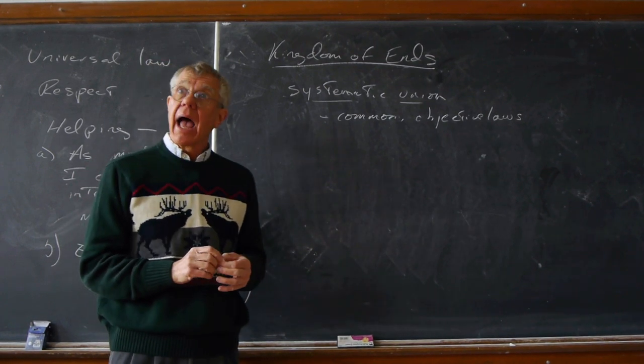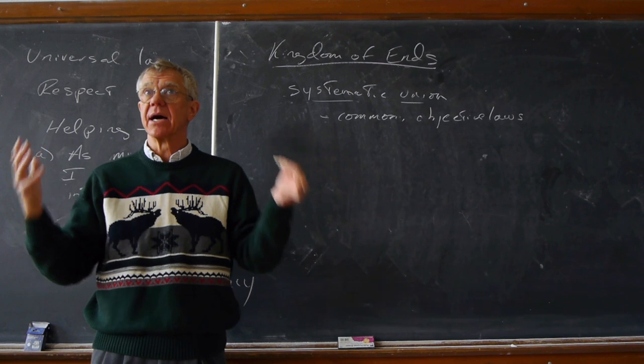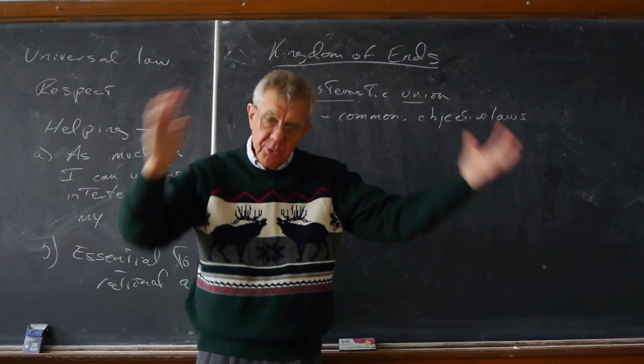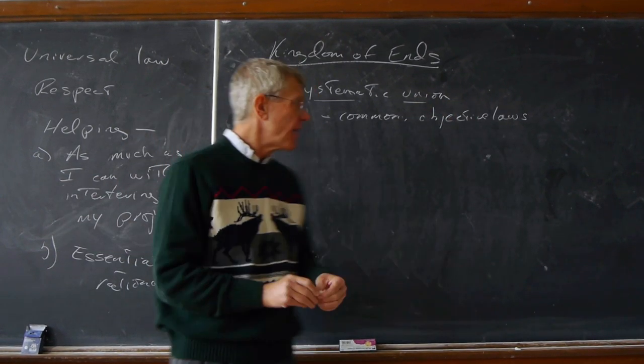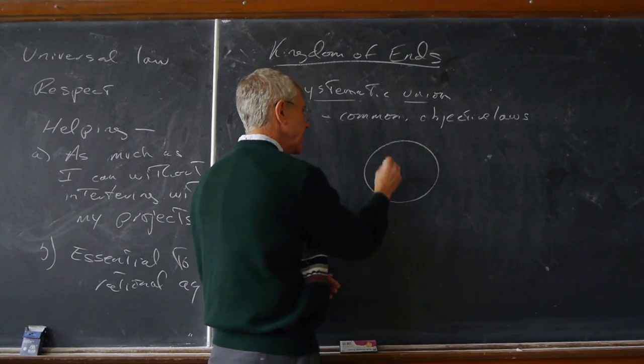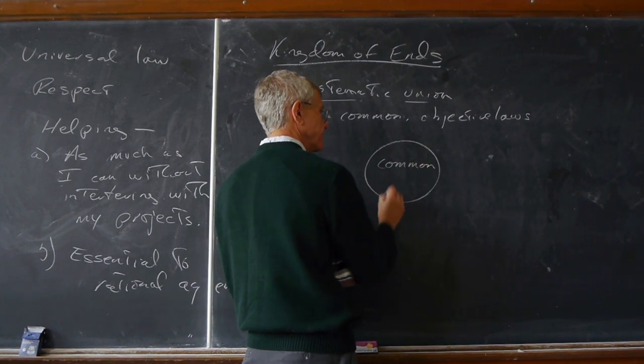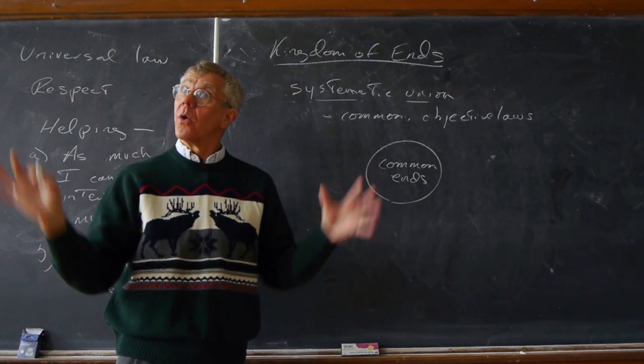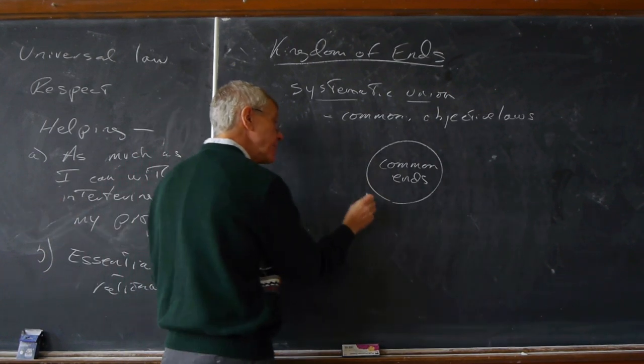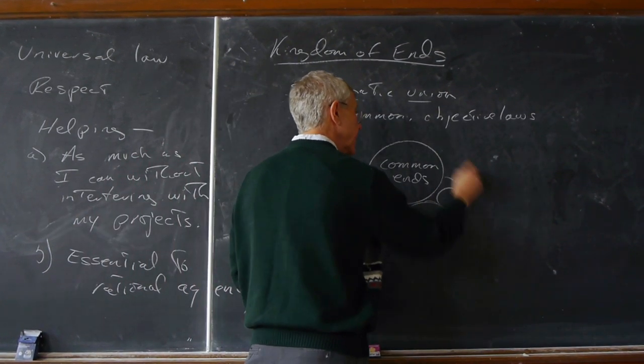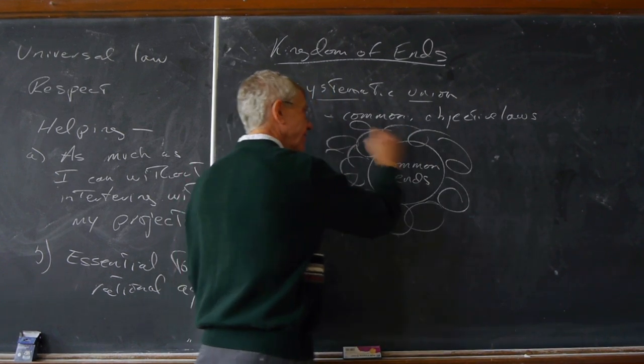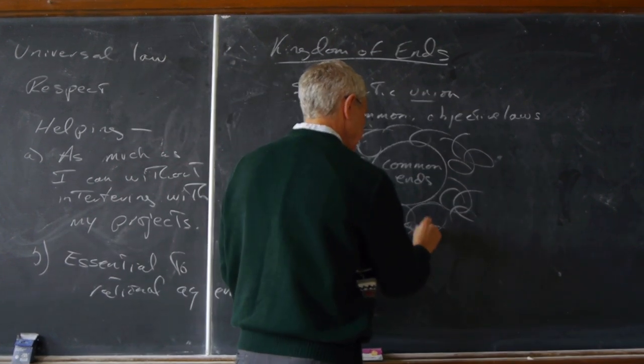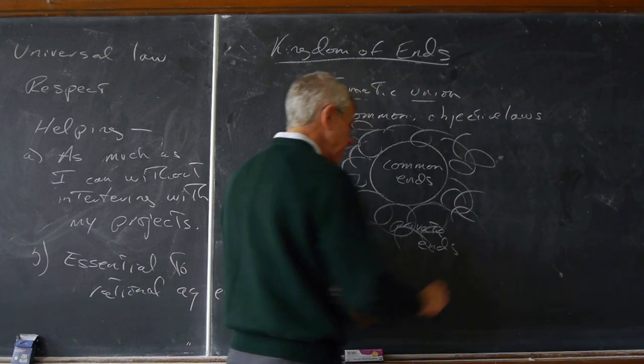He says, look, it's only an ideal. But a rational being belongs to the kingdom of ends when, although giving universal laws in it, he's also subject to the laws. He belongs to it as a sovereign when, while giving laws, he's not subject to the will. But the point is, everybody is subject to these laws. They're universal. So, a rational being must always regard himself as giving laws, as a member of sovereign, as a kingdom of ends. Now, that's what we're supposed to do. So, imagine yourself as a legislator who is also subject to the very same legislation. That's how you're to think of everything you do. Imagine that you are, in doing this, not only laying down the rule for yourself, but for everyone in this systematic whole. Well, okay. To some extent, then, this is capturing the idea of universal law, once again. But what do we mean by the systematic union?